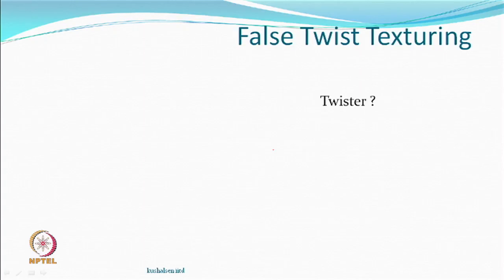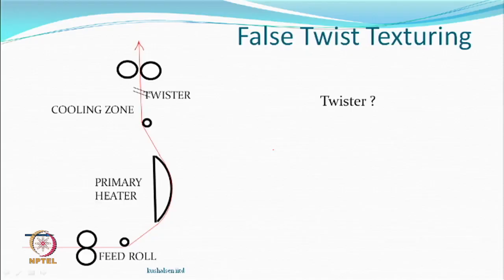The twist level in false twist texturing is quite high. In the same line diagram, you have a feed roller, a primary heater, a cooling zone, and now we have a twister. What is a twister and how does it work? There is something called a pin twister — it obviously looks like a pin, but the spindle is hollow, and there is a tube and a bulb with a pin somewhere. The yarn goes inside the tube, is taken one round, and comes out.